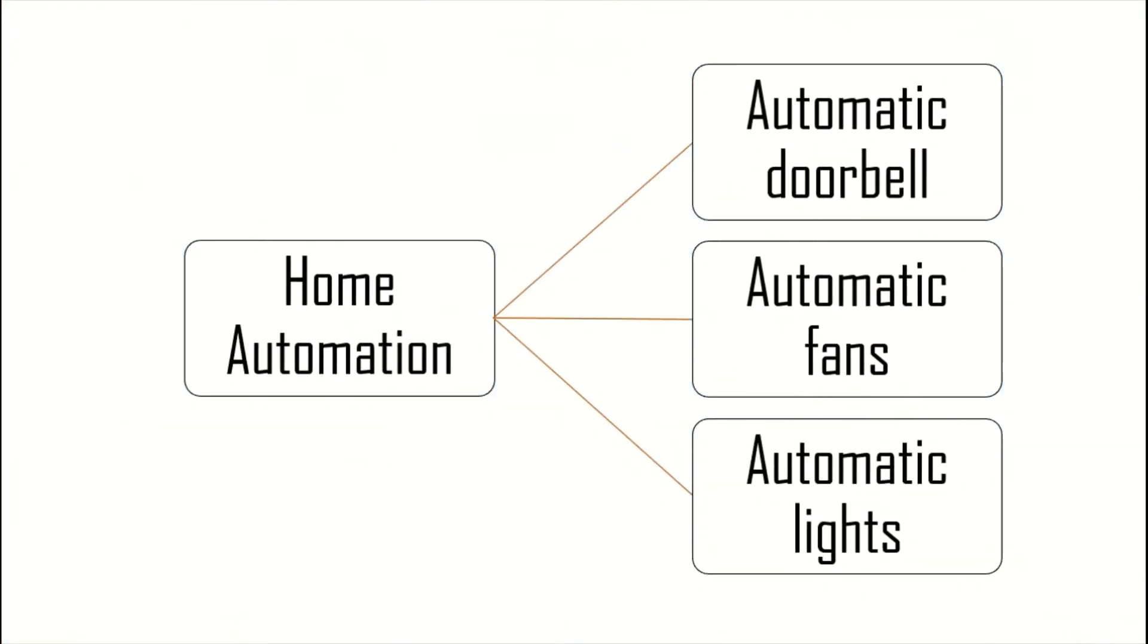The software or the functioning of the code is divided into three phases: the automatic doorbell phase, the automatic fan phase, and the automatic lights phase. Let's have a look at all three of them.